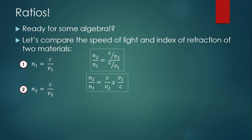Hopefully you can see now that there's a C on the top and a C on the bottom, and so the Cs cancel out. This leaves us with N2 over N1 equals V1 over V2.